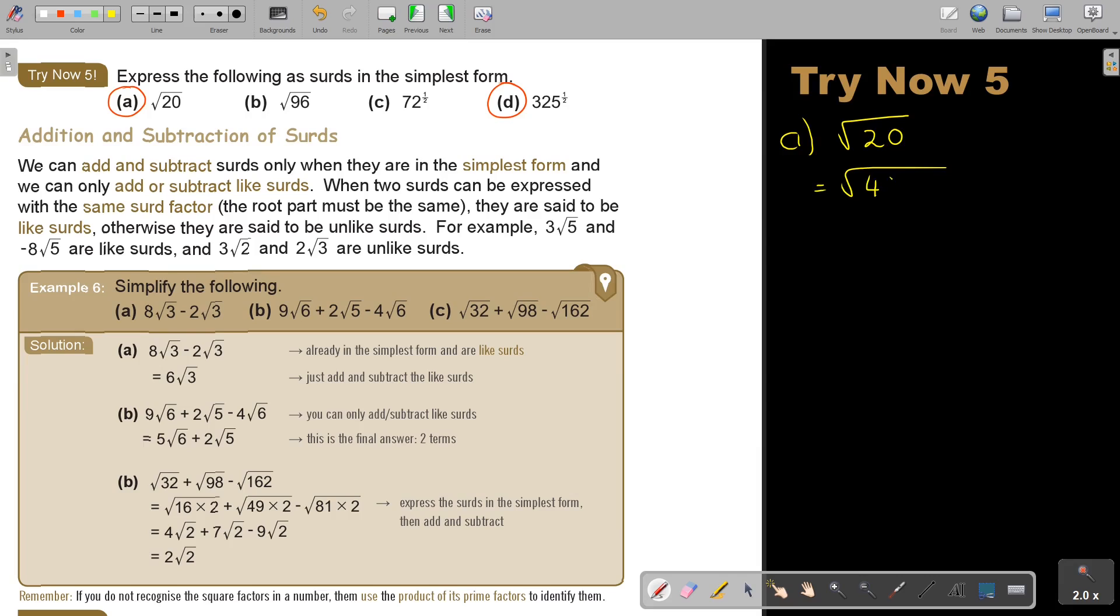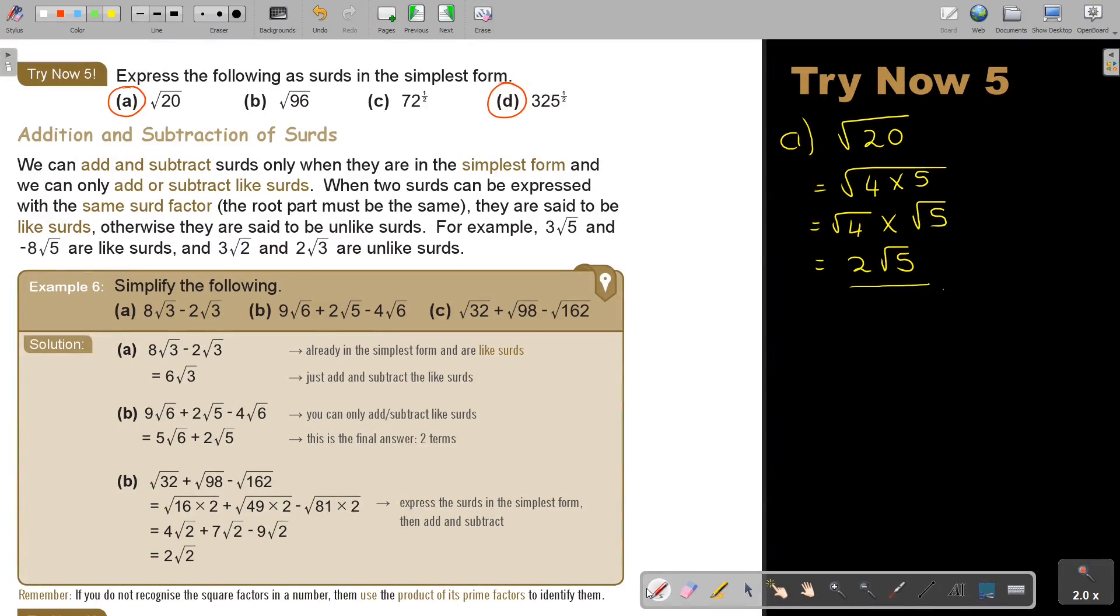So, I can say, if I say it's 4 times 5, and I want to use the rule. So, it's √4 times √5, which then will be 2√5, and that will be my answer. And that's, they like to ask, especially in this level, express it in the simplest form. Then you must go for this.